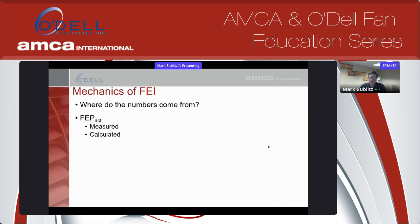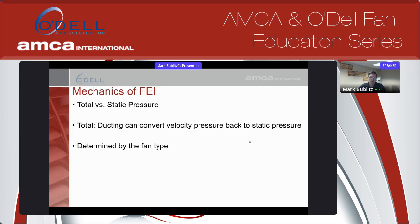Where do the numbers come from? There's this reference fan system, which you can calculate. Then there's your fan system — where does the energy consumption for that come from? In the standards it's phrased as FEP actual, and there are a couple of ways to do it: you can measure the whole system by plugging it in and measuring it directly, or you can calculate it. In the end you still need to run an AMCA 210 test to get fan performance, and then calculate the rest of the FEI rating based on the drive system components and their efficiencies. There are also two ways to compute FEI: one uses static pressure and one uses total pressure.